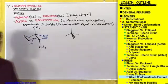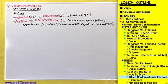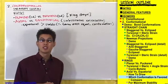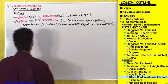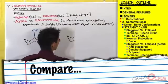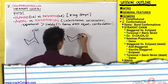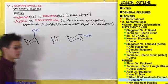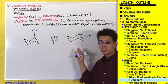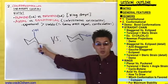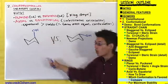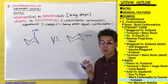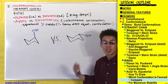Let me show you an example. I'm going to draw two different conformations of a cyclohexane and you tell me which one will be more stable, more favored. Which conformation is going to be more stable — this first one where the OH substituent is in an axial position, or this second conformation where the OH is in an equatorial position? It's going to prefer the second conformation because equatorial is more stable than axial.